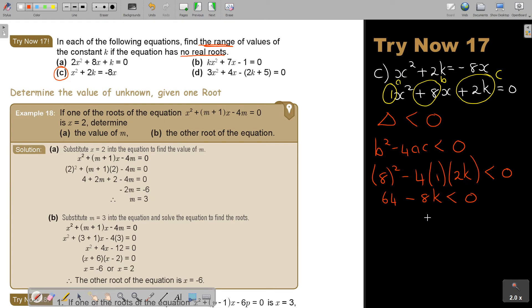And then I'm going to go on. I'm going to say minus 8K smaller than negative 64. As soon as I divide by negative, I actually have to swap the sign. So I'm rather going to do it in this step. So therefore, the value of K is bigger than 8.